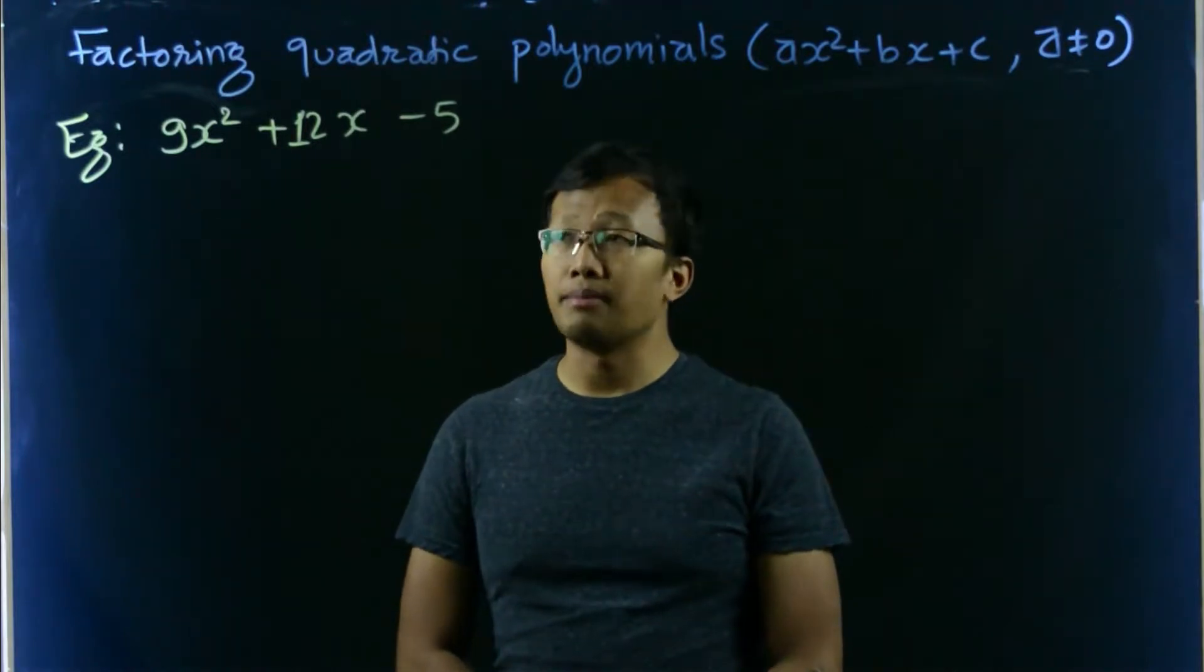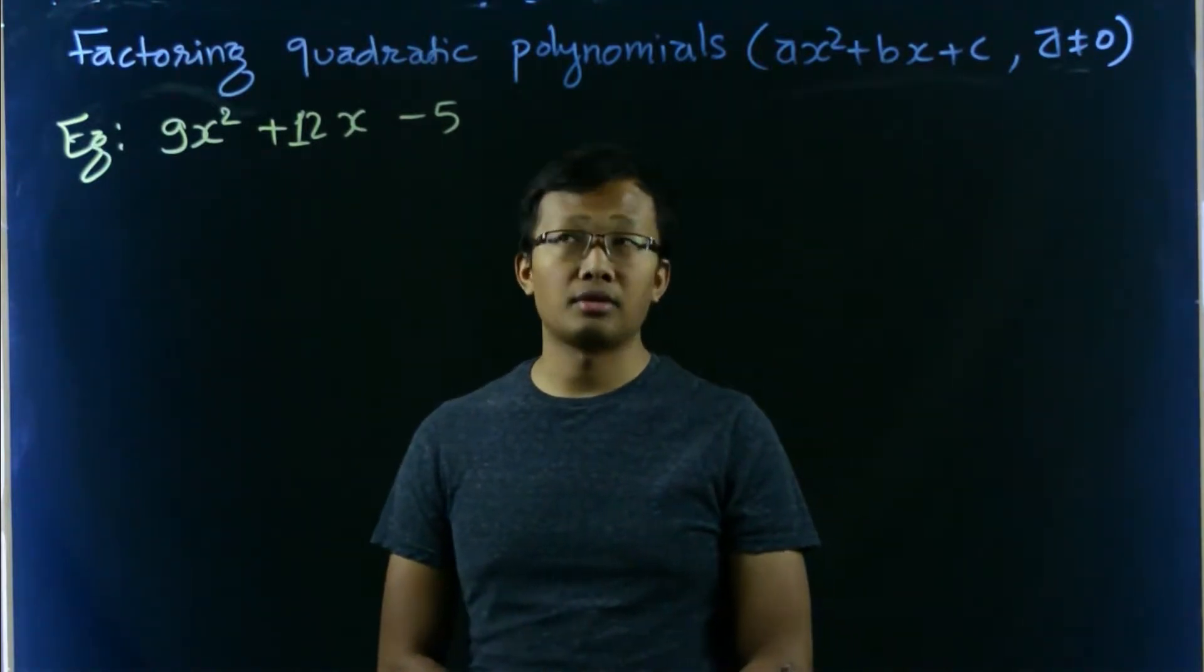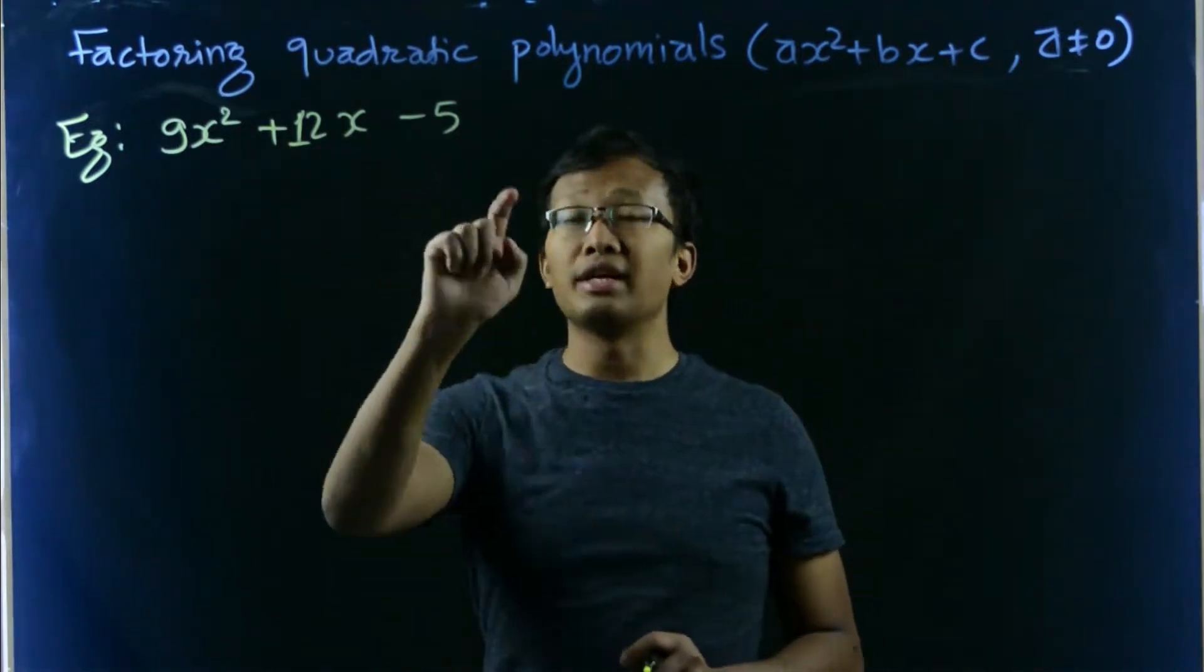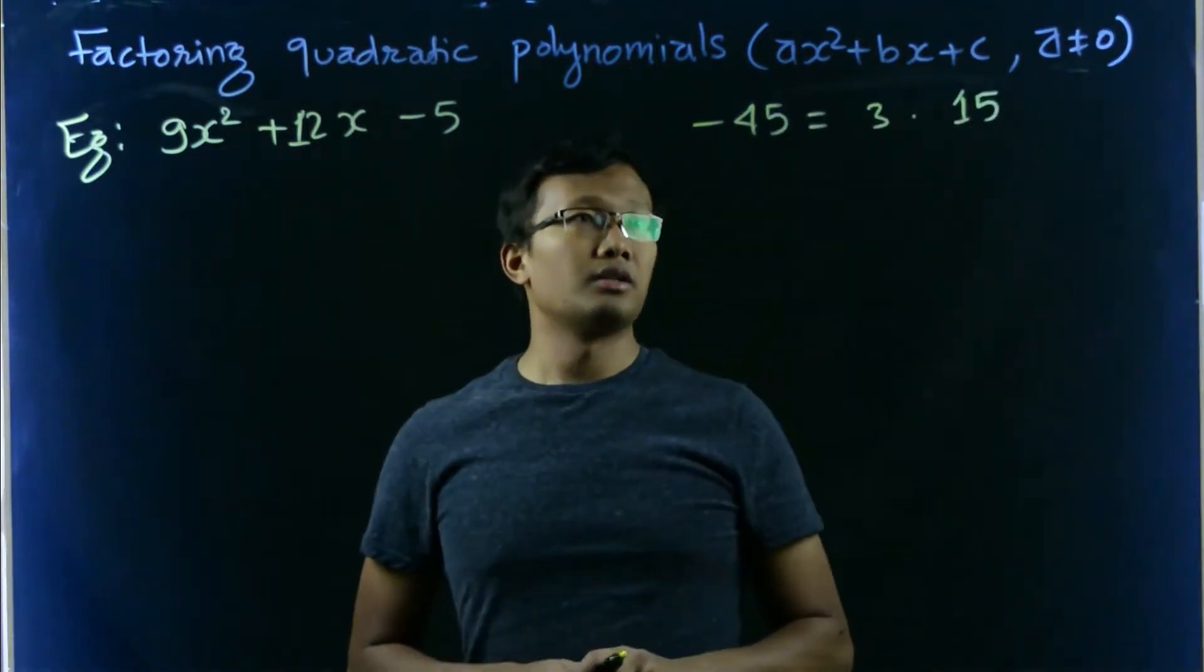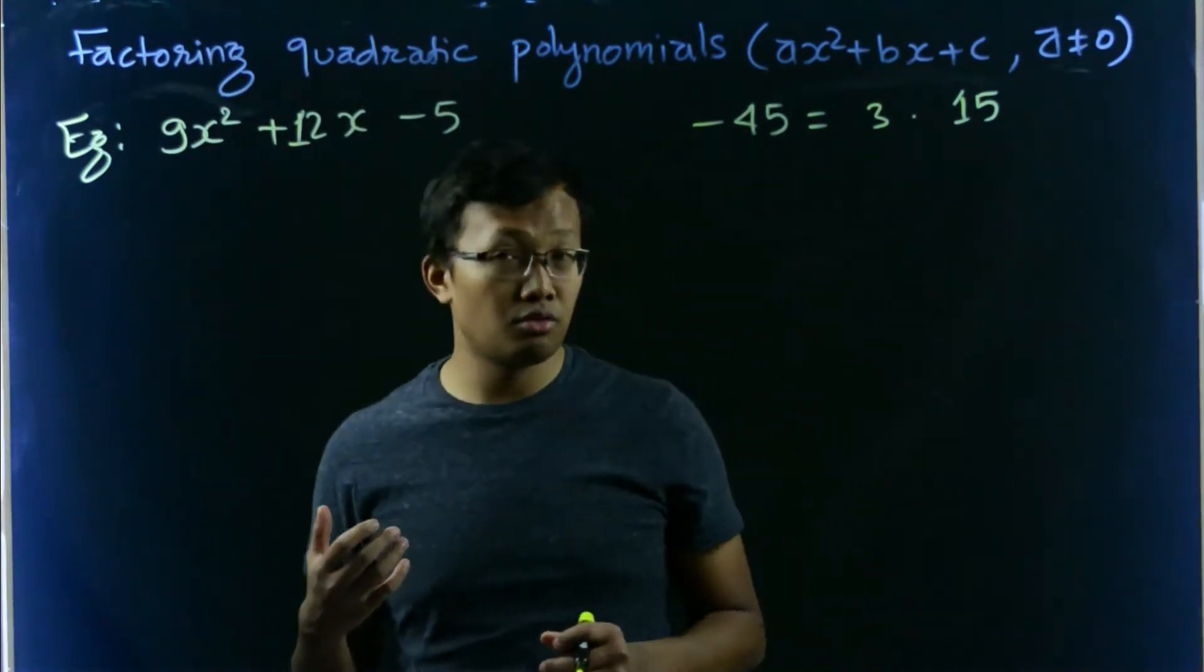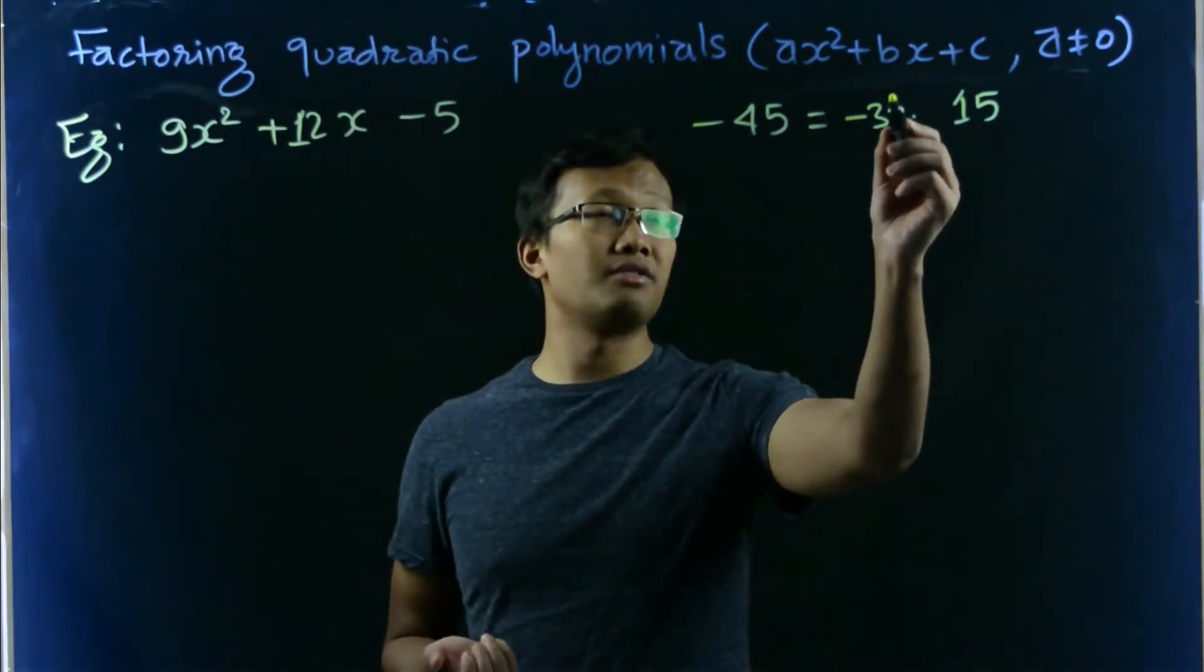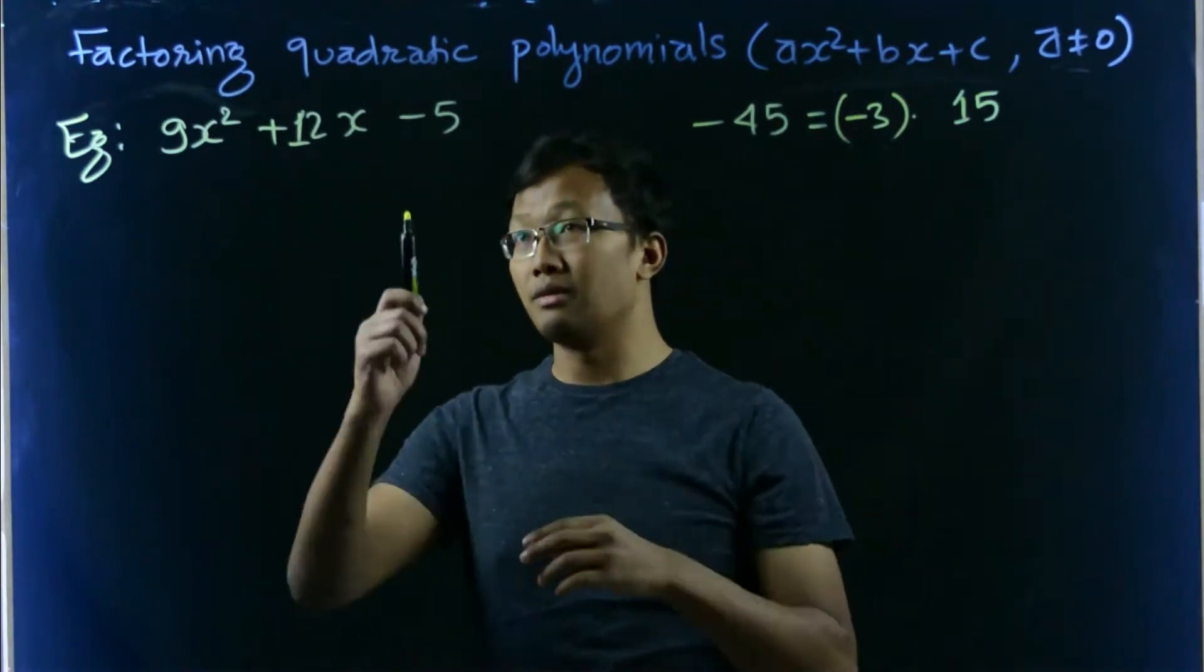Let's take another example: 9x squared plus 12x minus 5. 9 times negative 5 is negative 45. So we know that 15 and 3, the difference is 12. And now we want to choose where does this negative go? It should go to negative 3 instead of 15, since 15 minus 3 will give us 12.